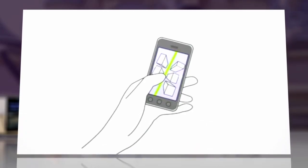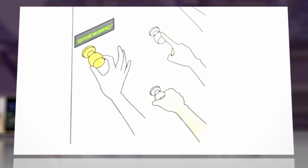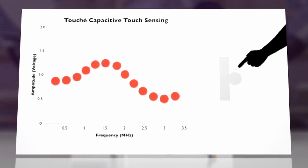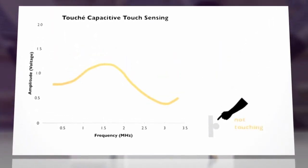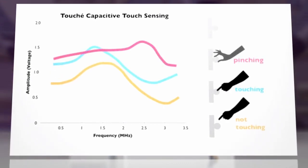The technology, called Touche, could perform simple computing tasks instead of a keyboard or touchscreen. Touche uses a sensing circuit to monitor changes in an electrical signal passing through an object when the object is touched by a conductive material.